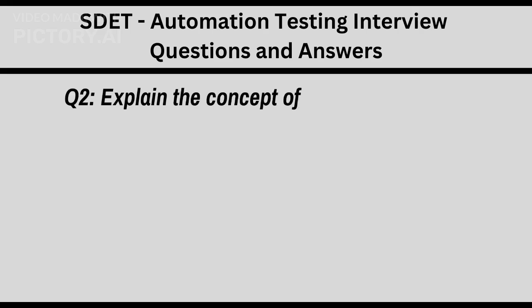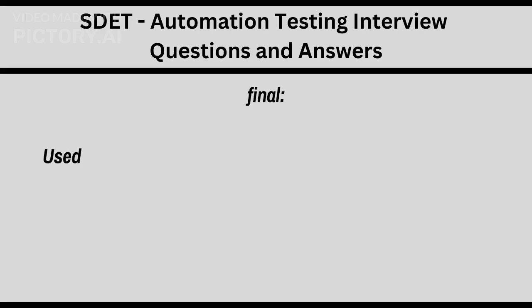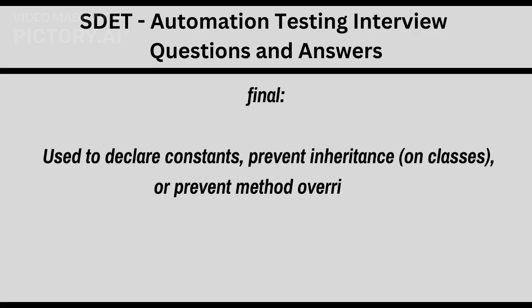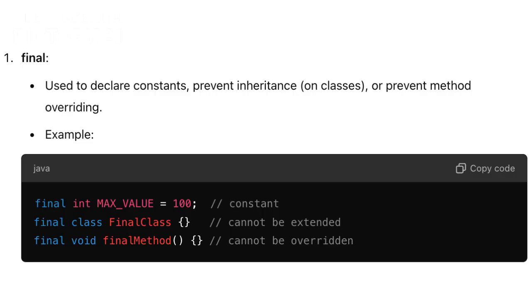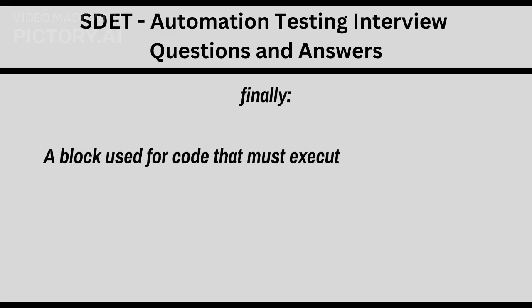Q2. Explain the concept of final, finally, and finalize in Java. Final is used to declare constants, prevent inheritance on classes, or prevent method overriding. Finally is a block used for code that must execute after try-catch, like closing resources.